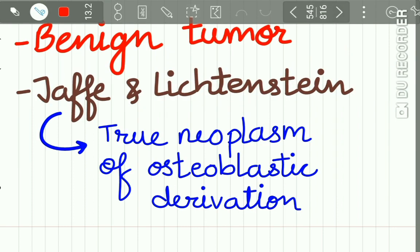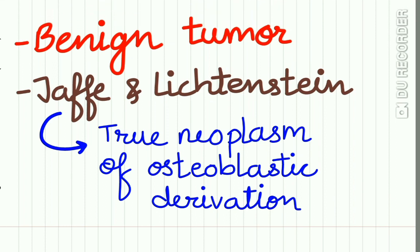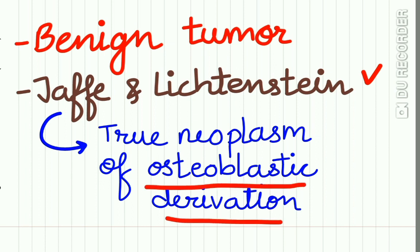Osteoid osteoma is a benign tumor of bone which has seldom been described in the jaws. It was first described by Jaffe and Lichtenstein as a true neoplasm of osteoblastic derivation.